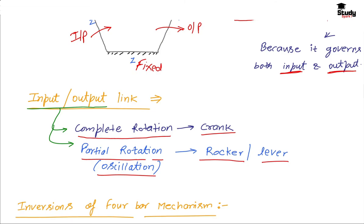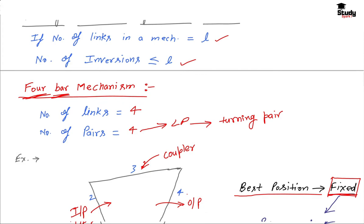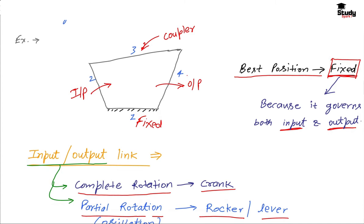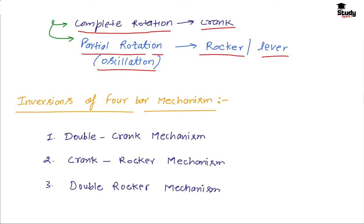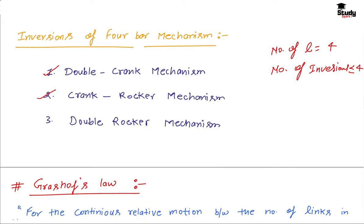To summarize the four-bar mechanism: number of links = 4, number of pairs = 4, turning pairs = 4, with an input link, output link, coupler, and fixed link. For the inversions of the four-bar mechanism — since we have 4 links, number of inversions is less than or equal to 4. But for the four-bar mechanism, there are only three inversions possible: double crank, crank-rocker, and double rocker mechanism.